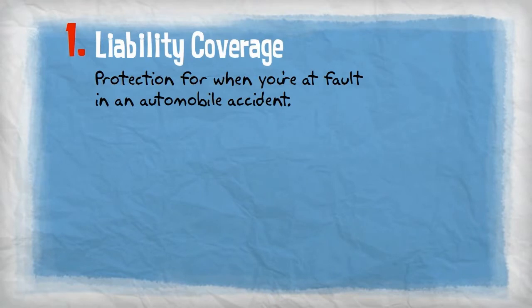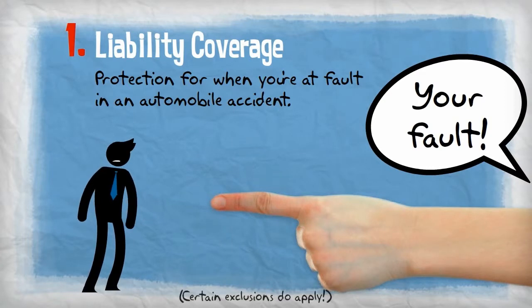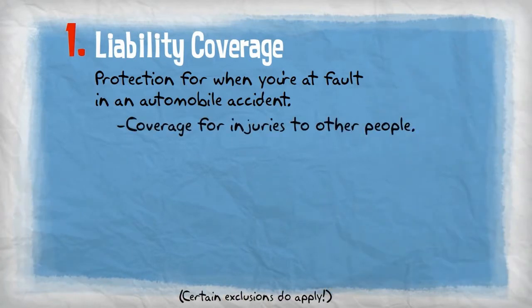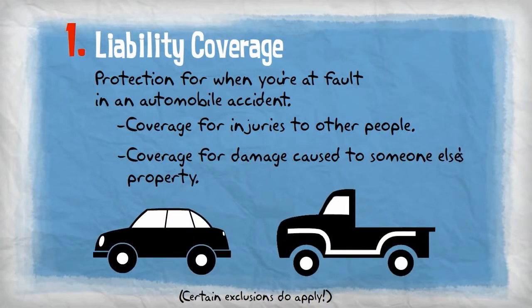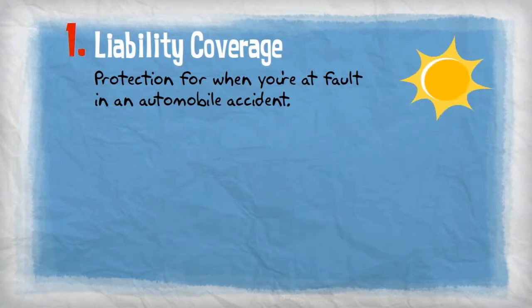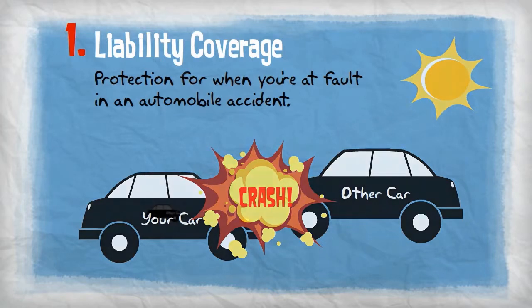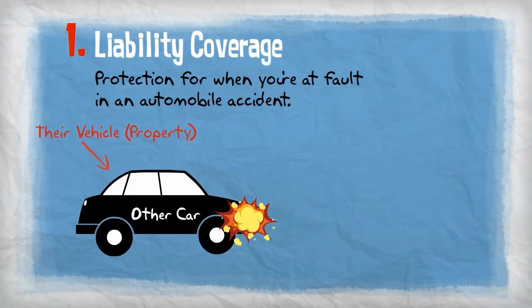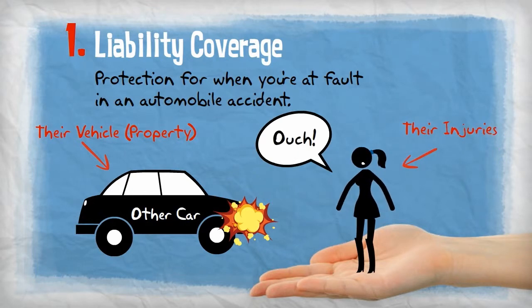Liability coverage provides you with the coverage you need in the event that you're at fault in an automobile accident. This coverage offers two types of protection: coverage for injuries to other people and coverage for damage to someone else's property while you or a family member are operating any automobile. So if you accidentally hit someone else's car and injure the other driver, your liability coverage would pay for not only the covered damages to their vehicle, but also for the medical expenses related to their injuries — not your own.